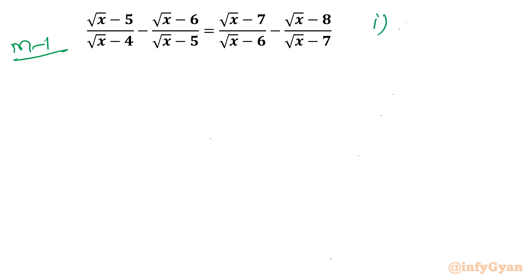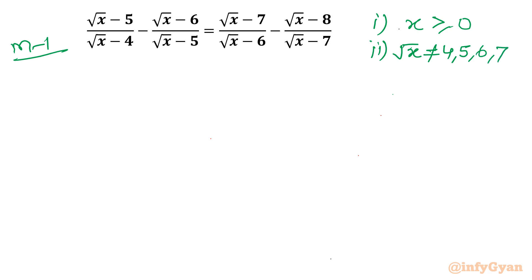Square root is involved, so the first condition is x should be greater than or equal to zero. Second, the denominator cannot be zero, so √x cannot be equal to 4, 5, 6, or 7. In other words, x cannot be 16, 25, 36, or 49.